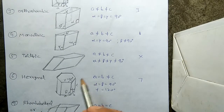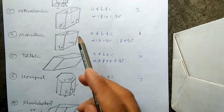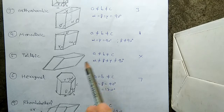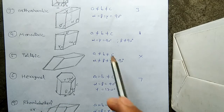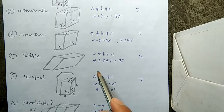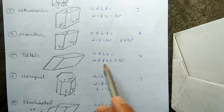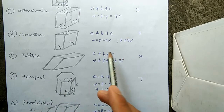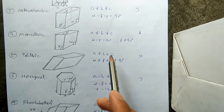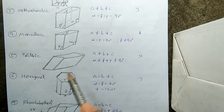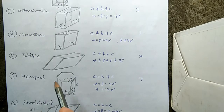The fifth one is Triclinic. Triclinic is similar to Monoclinic but it is tilted. In this system, nothing is equal: a is not equal to b, b is not equal to c, and alpha, beta, gamma are all unequal and are not equal to 90 degrees. The Triclinic system has zero planes of symmetry.